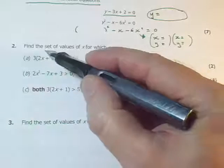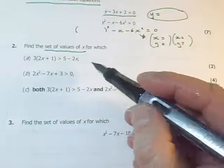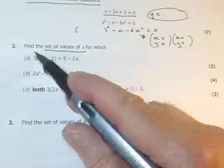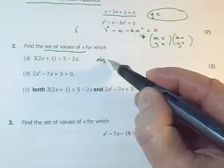In question two we're finding sets of values, so these are inequalities. The first one doesn't have any x squared in it, so it's a linear inequality. You can just use algebra to solve it.